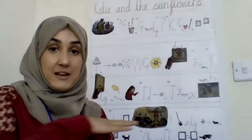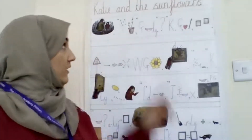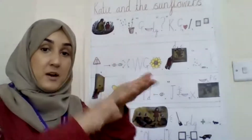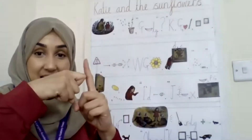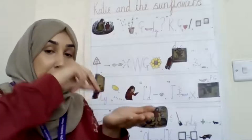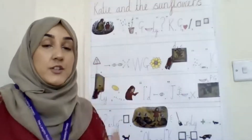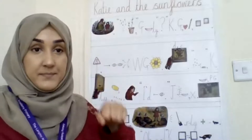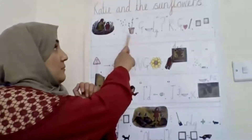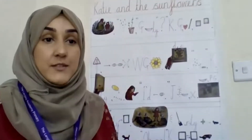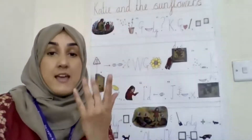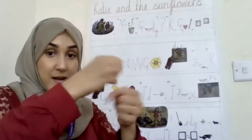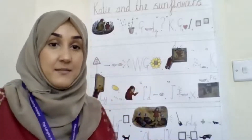Katie and the Sunflowers. Grandma was helping Katie plant some seeds in the garden when it started to rain. The rain will make everything grow, said Grandma delightedly.